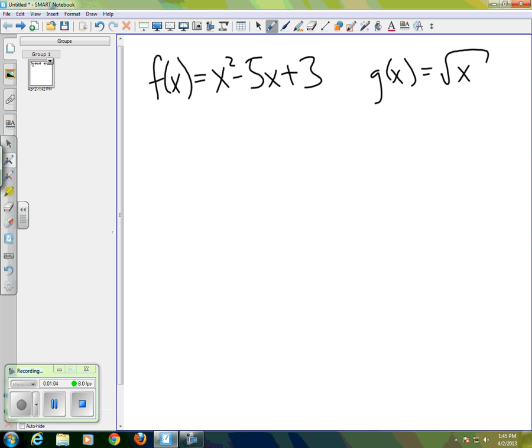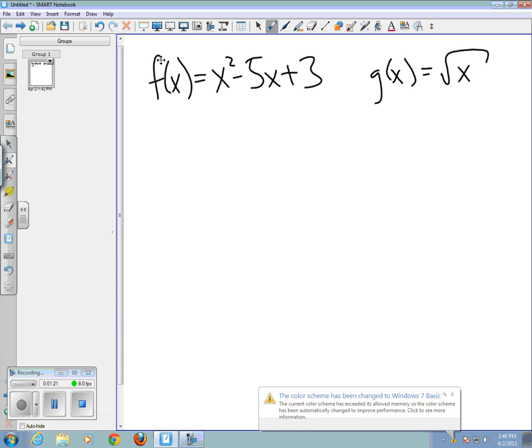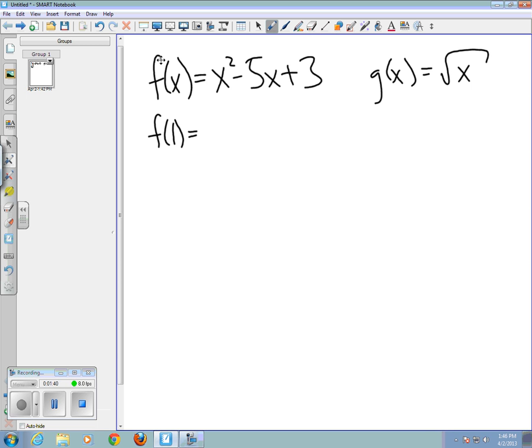The one observation we want to make with these two functions is that with the function f we can choose any value of x that we want and evaluate the function. We'll be able to get an output from any input x value. So for instance x could be one in which case we get negative one for our output. So f of one equals negative one. We could also put in some very large value if we wanted, like one million, and we would get a value for f of one million.